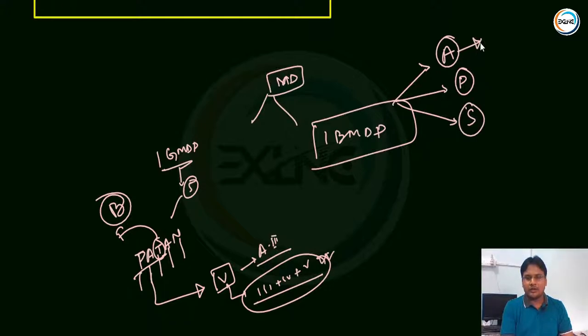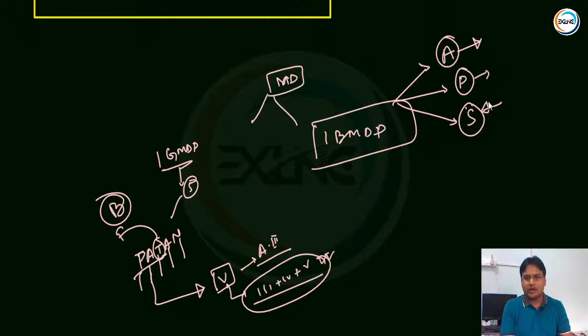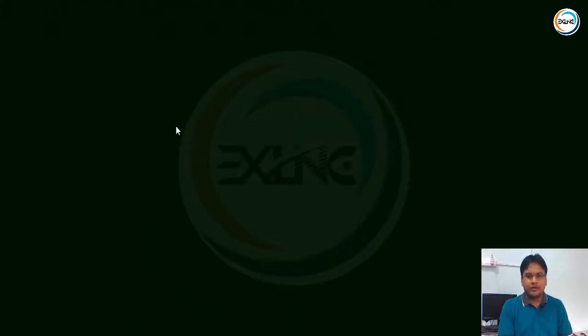For the Ballistic Missile Defense program with three components - Ashwin class, Pradhiman class, and Swordfish radar - Ashwin class provides cover up to 30 km altitude and 200 km horizontal range. Pradhiman class provides 80 km altitude and 2000 km horizontal range. Swordfish radar is LRTR. Remember all these as they will be directly asked in the exam.